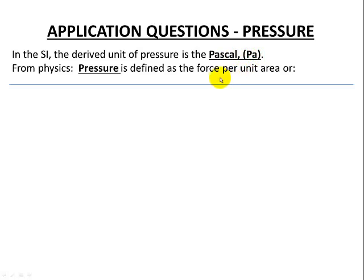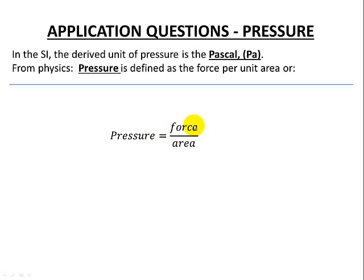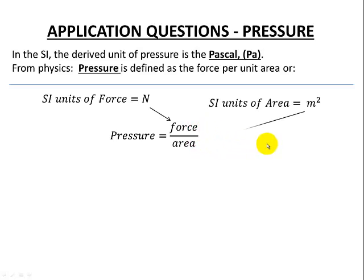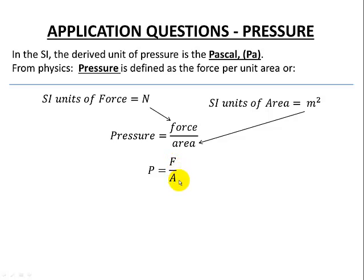From physics, pressure is defined as the force per unit area — pressure is force divided by unit area. The units of force are going to be newtons, and the units of area are required to be meters squared. In symbol form: capital P for pressure, capital F for force, and capital A for area.